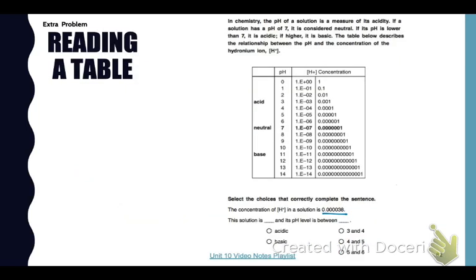Read through this extra problem. It says the concentration of the H positive hydrogen ion in a solution is 0.000038. So the solution is, and we have to find that on the table to determine if it's acidic or basic and its pH level. So if we look at our table, this number is bigger than 1 ten-thousandth, but smaller than 1 thousandth. So that means that it is between 3 and 4 and is acidic.